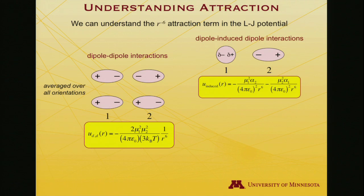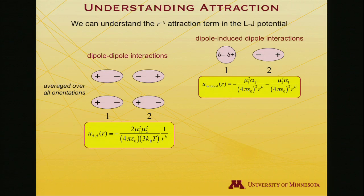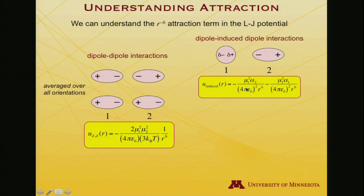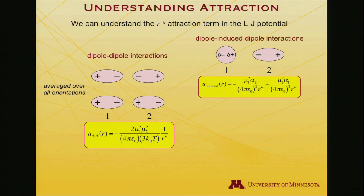Another R to the minus 6 interaction is a dipole-induced dipole interaction. When a molecule with a permanent electrical moment is brought up to a molecule that does not have a permanent moment — maybe it's an atom — it will polarize the electron cloud of that atom and introduce an induced dipole. To emphasize that it's induction, I've put these little delta symbols here. When one works through the electrostatics, if you have two systems each of which has a permanent dipole, each permanent dipole can induce some additional dipole in the other. The net interaction goes as the square of the individual dipole moments times the polarizability alpha — the ability to be polarized — along with the permittivity of free space and an R to the minus 6 dependence.